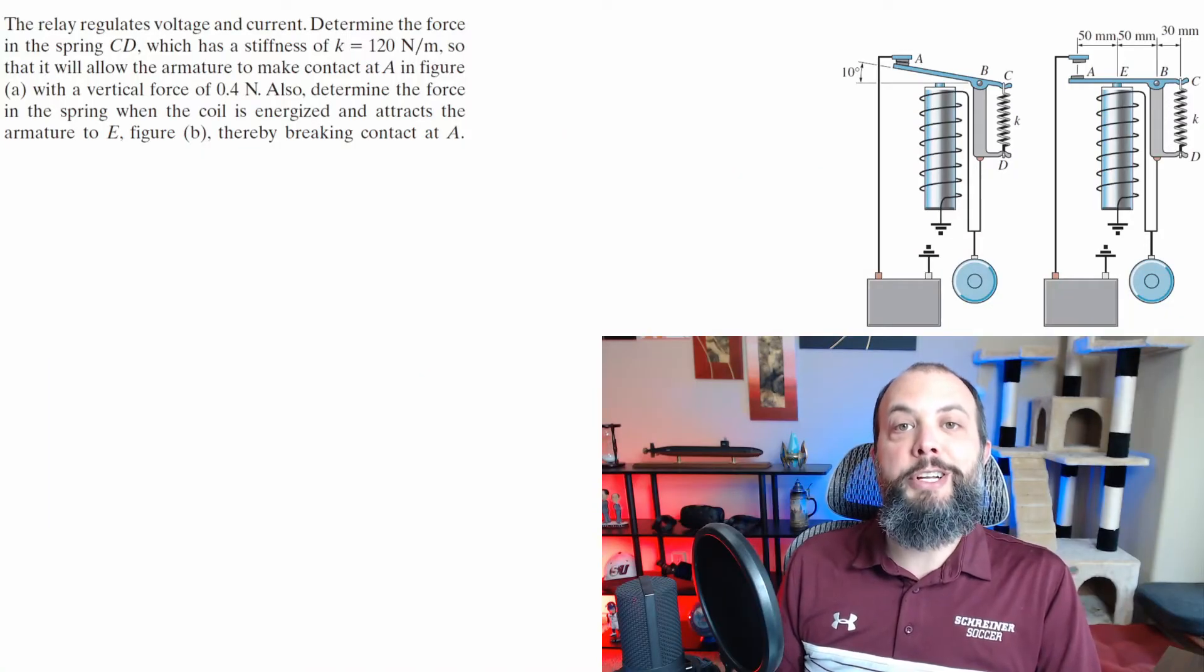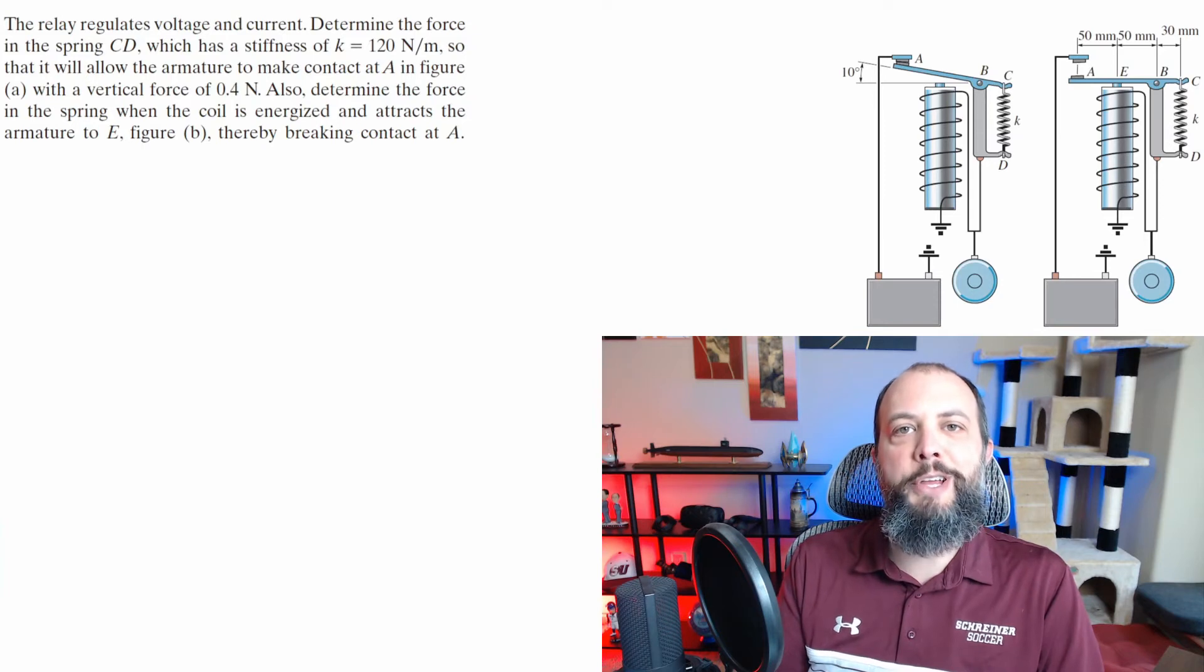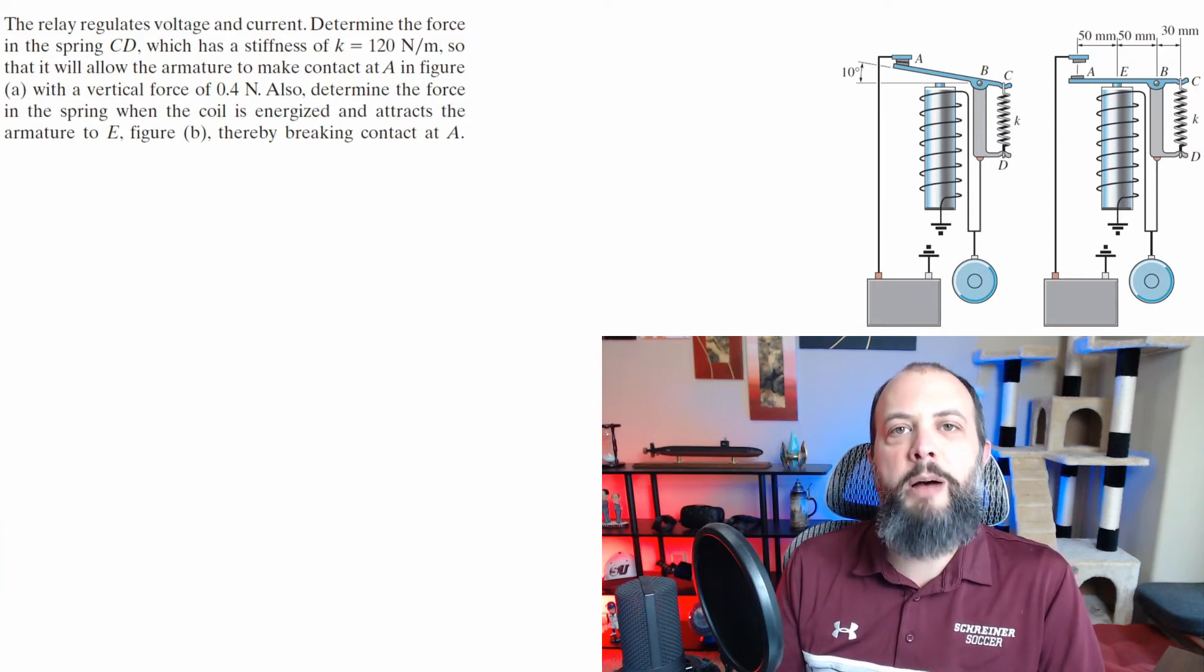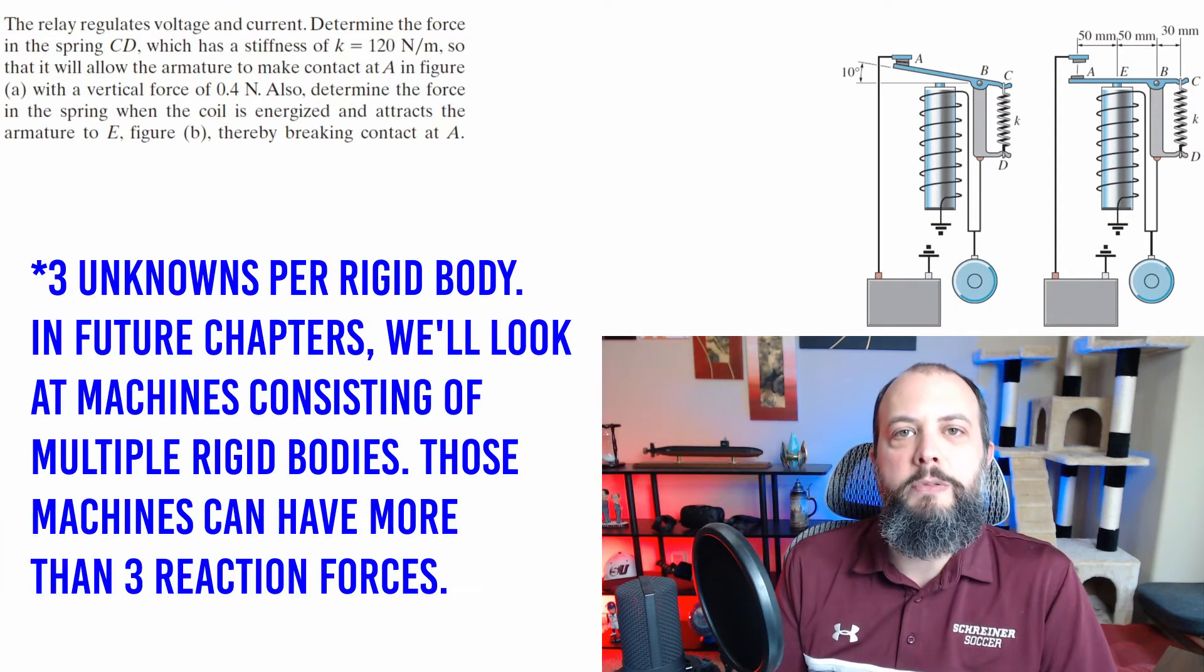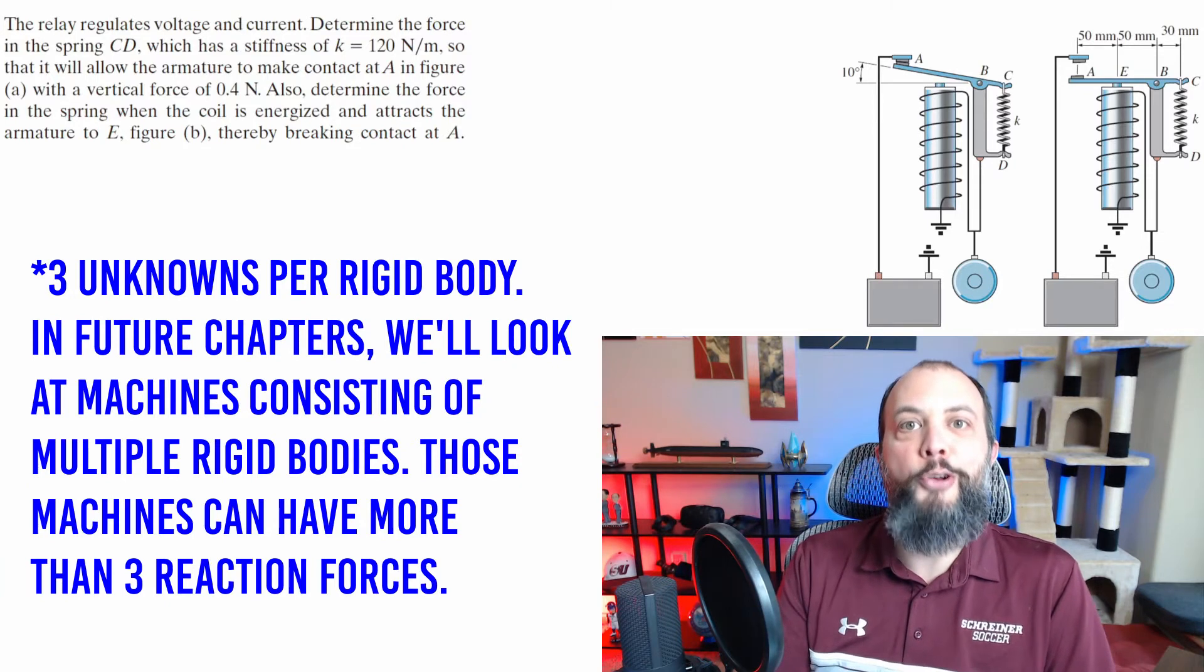It's problems like these where a lot of engineering students decide to just nope on out. It just looks so complex you can't figure out even what you're trying to find. So when you see a complicated machine problem like this, just keep in mind there can only be three unknowns. So first try to find the relevant free body so that you can ignore everything else.